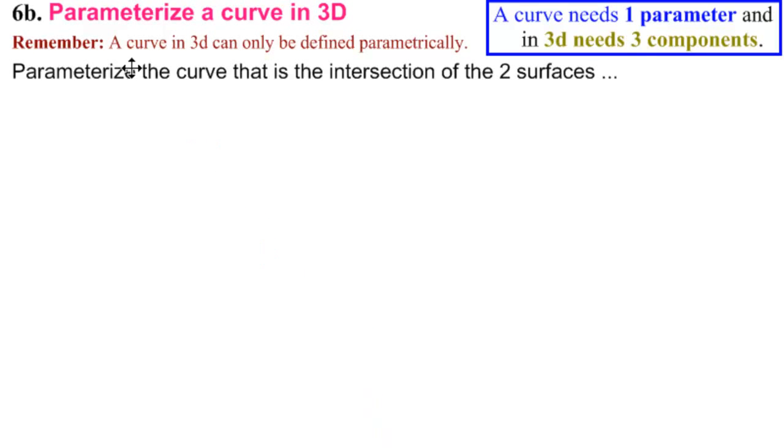Okay, on to our second example of how to parameterize a curve in 3D. And of course, we remember that a curve in 3D can only be defined parametrically, but it can be described as the intersection of two surfaces. And that in the end, we need one parameter, and because we're in 3D, we need three components.